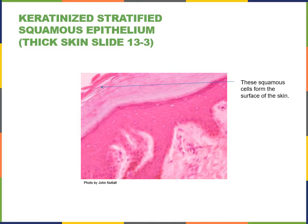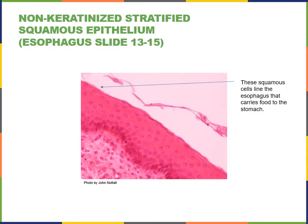Examples of non-keratinized stratified squamous epithelium are found in the mucous membranes of the mouth, esophagus, rectum, and vagina. Here's a light micrograph of the stratified squamous epithelium from the esophagus. There are still flat cells at the apical surface and numerous layers of cells, but many fewer layers of dead cells at the apical surface because the esophagus mucous membrane is a non-keratinized stratified squamous epithelium.